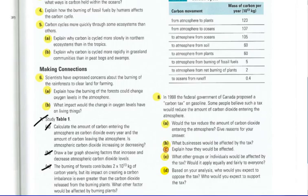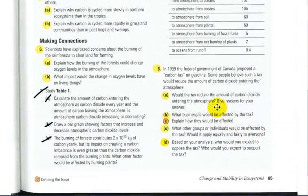And lastly, number eight here. So, we'll omit seven. In 1998, the federal government of Canada proposed a carbon tax on gasoline. And this is something that you'll continuously hear about. Some people believe such a tax would reduce the amount of carbon dioxide entering the atmosphere. So, if we had our gasoline taxed higher, maybe we'd use less gas, and that means less combustion and less carbon being released. So, this whole question here is kind of your opinion. Would the tax reduce the amount of carbon dioxide entering the atmosphere? Give reasons for your answer.